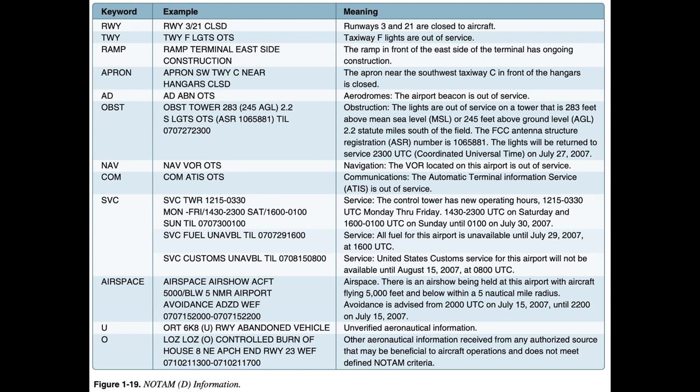NOTAM Composition. NOTAMs contain the following elements from left to right: (1) an exclamation point; (2) accountability location — the identifier of the accountability location; (3) affected location — the identifier of the affected facility or location; (4) a keyword (RWY, TWY, Ramp, Apron, AD, NAV, COM, SVC, Airspace, U, or O); (5) surface identification (optional) — the runway identification for runway-related NOTAMs, the taxiway identification for taxiway-related NOTAMs, or the ramp/apron identification for ramp/apron-related NOTAMs; (6) condition — the condition being reported; and (7) time — identifies the effective times of the NOTAM condition.